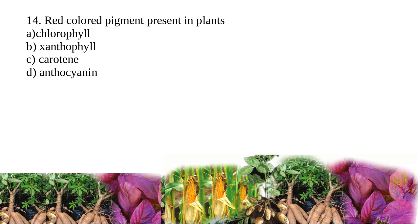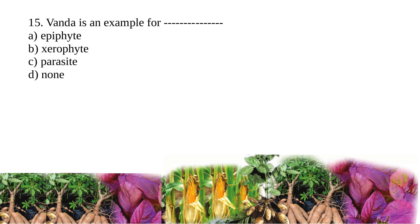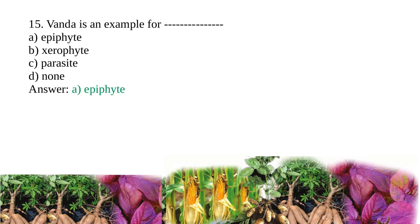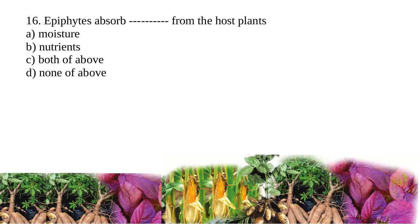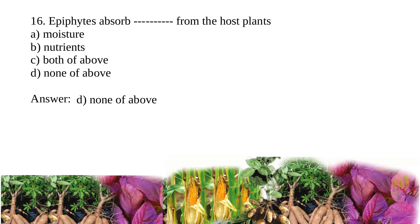— chlorophyll, xanthophyll, carotene, or anthocyanin? The answer is anthocyanin. Vanda is an example for — epiphyte, parasite, or none? The answer is epiphyte. Question: epiphytes absorb dash from the host plants — moisture, nutrients, both of the above, or none of the above?